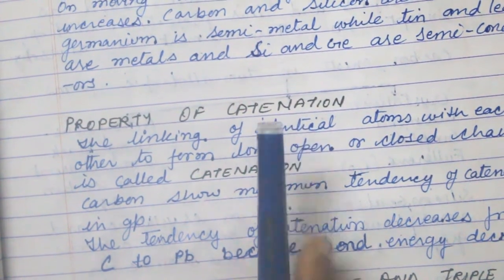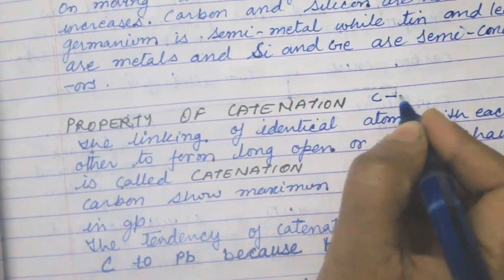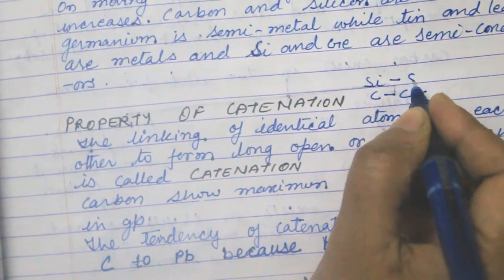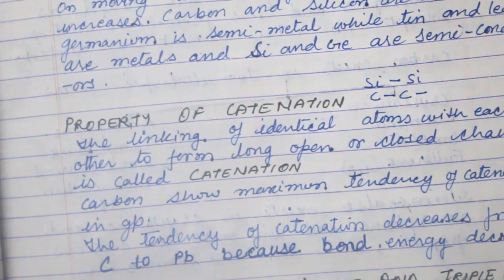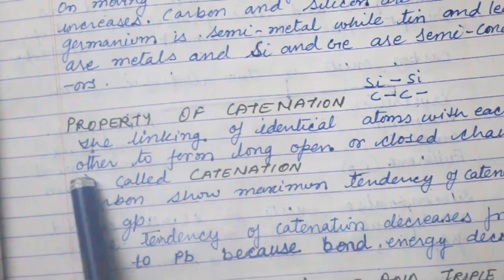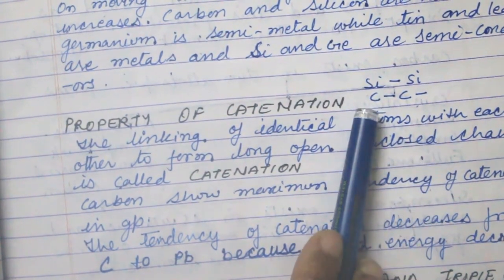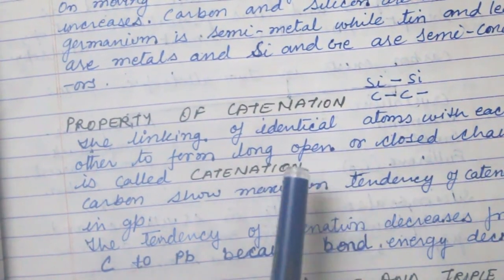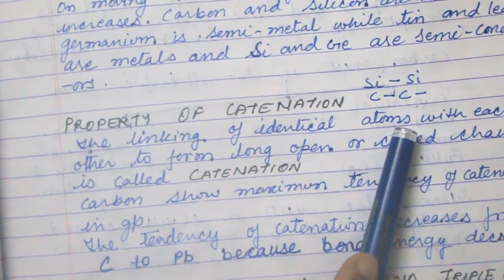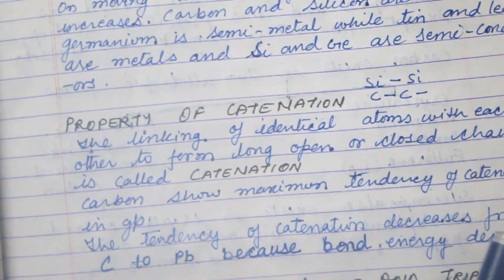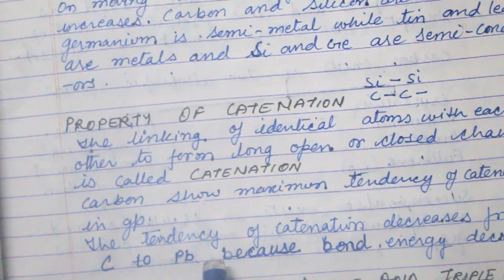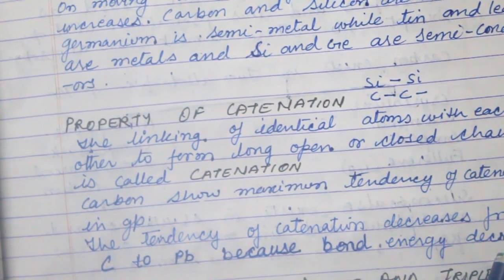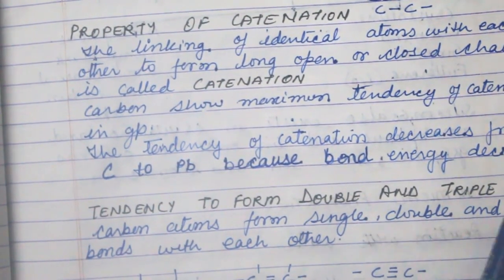Catenation is the property of forming straight chains. Whether it is carbon or silicon, they form straight chains. Catenation is defined as the linking of identical atoms — such as a carbon chain or silicon chain — with each other to form long open or closed chains. Carbon shows the maximum tendency of catenation in the group, and this tendency decreases from carbon to lead because bond energy decreases.